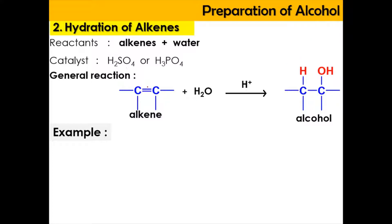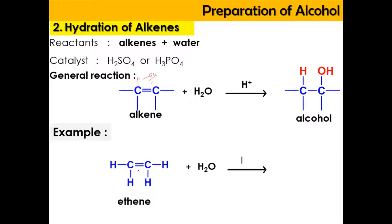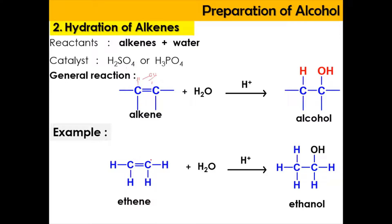The alkene's carbon-carbon double bond is going to break apart, and hydrogen and OH are going to be inserted. For example, ethene has two carbon chains. When reacted with water at acidic condition, H⁺ and OH⁻ ions are inserted into the carbon-carbon double bond, and CH and COH are placed here in order to form ethanol. This situation is easy because H and OH can be placed anywhere.